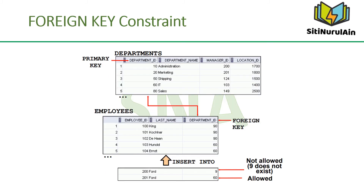The foreign key, or referential integrity, constraint designates a column or combination of columns as a foreign key and establishes a relationship with a primary key or unique key in the same table or a different table. In the example in the slide, DEPARTMENT_ID has been defined as the foreign key in the EMPLOYEES table (the dependent or child table). It references the DEPARTMENT_ID column of the DEPARTMENTS table, which is the referenced or parent table.